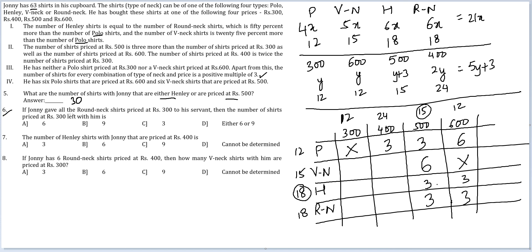Next question: if Johnny gave all the round neck shirts priced at 300 to his servant, how many shirts priced at 300 are left with him? The round neck row has a distribution of 6, 3, 3 across the remaining price columns, but we don't know if the 300 cell holds 6 or 3. Either six shirts go away leaving six, or three shirts go away leaving nine. The answer is either 6 or 9, which corresponds to option D.